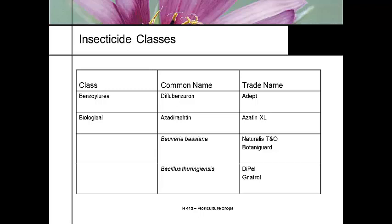Here are some insect pesticide classes, with common names and trade names. Benzylurea is one class of biologicals. Others include azadirachtin — a refined form of neem oil, making it non-organic — Beauveria bassiana, and Bacillus thuringiensis. Beauveria bassiana is actually a fungus that infects and kills whiteflies. You spray it on, and it takes time to work — you won't see dead insects the next day, so it's a management tool.